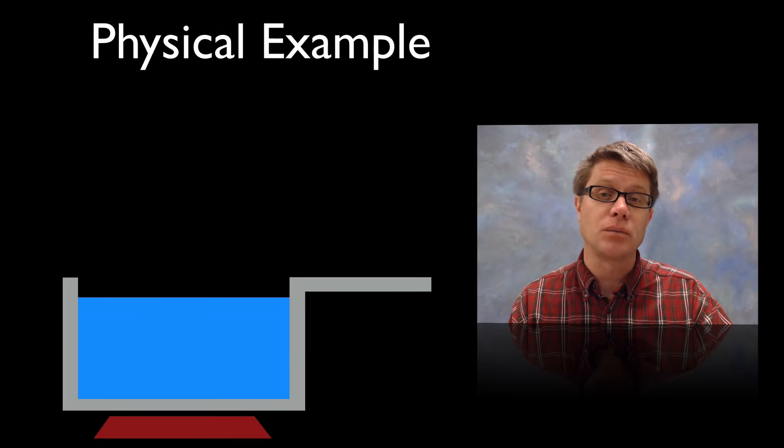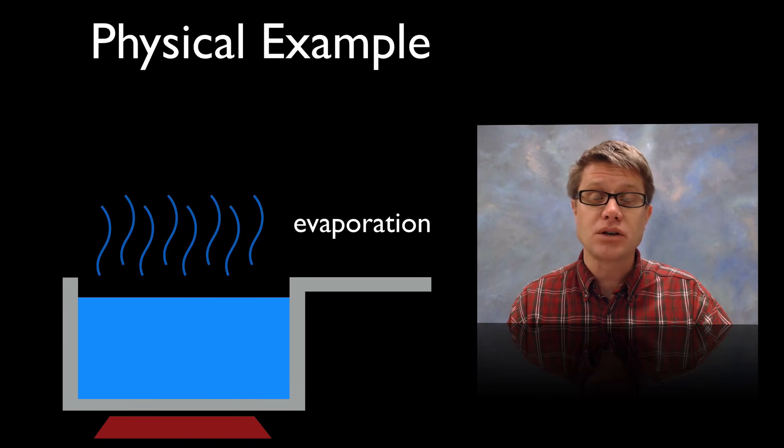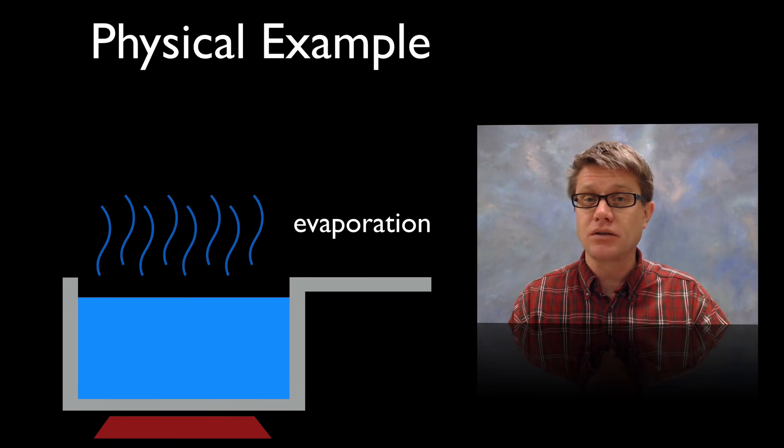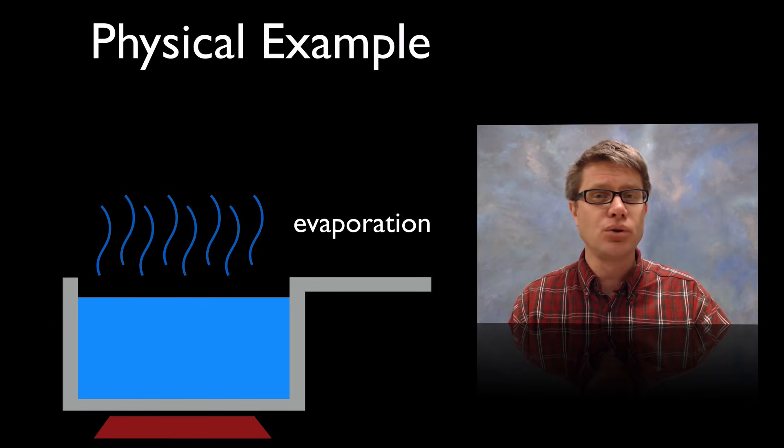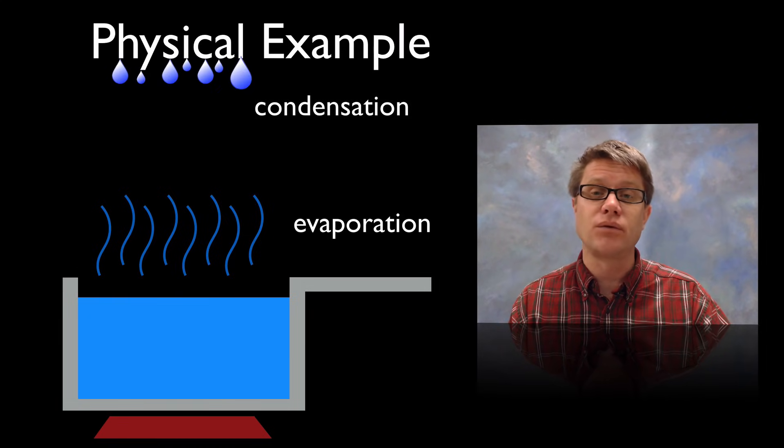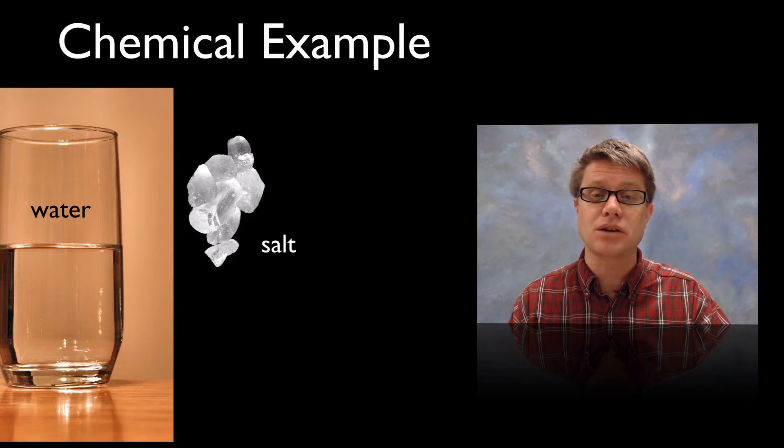A physical example of a reversible reaction could be evaporation of water. When we heat it up we are breaking those hydrogen bonds and it is moving from a liquid to a gas. But if we cool it down then we are simply going to have condensation again. So we have reversed that physical reaction.